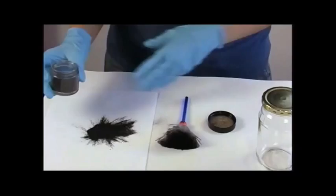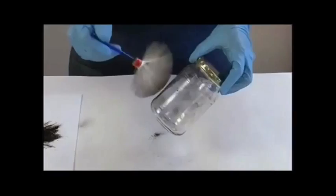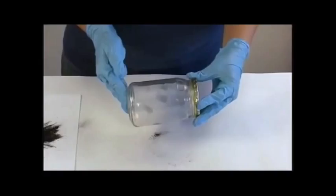You're going to spread the powder on a sheet of paper and dab the brush just a little bit. Then you're going to move in a back and forth motion on the area until you start seeing the fingerprint.